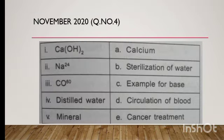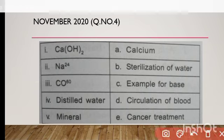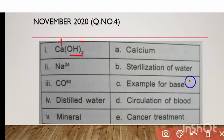Next we will move to match the following from the November 2020 question paper. The first one is calcium hydroxide, which produces Ca2+ and OH-. A compound producing OH- is an example of a base.